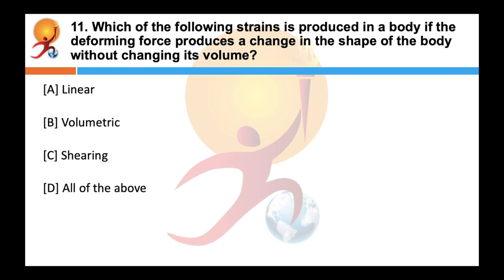Which of the following strains is produced in a body if the deforming force produces a change in the shape of the body without changing its volume? Correct answer is C — shearing strain. Shearing strain is defined as the angle in radians through which a plane perpendicular to the fixed surface of a cubical body gets turned under the influence of tangential force.